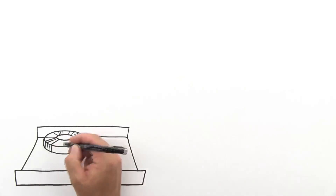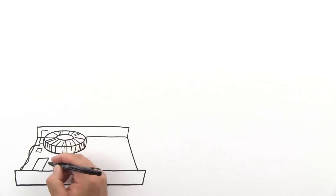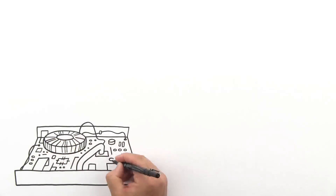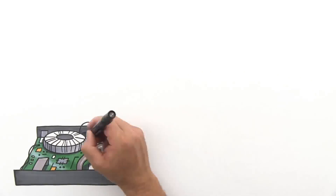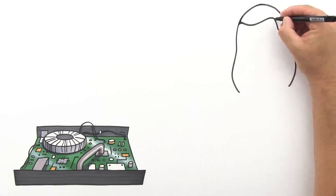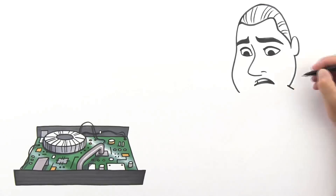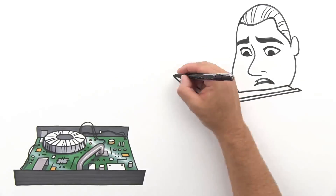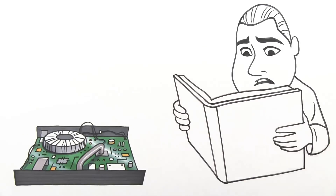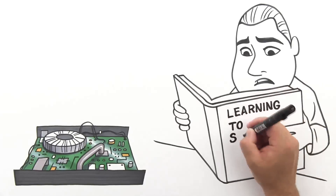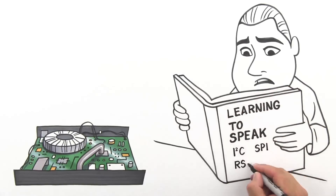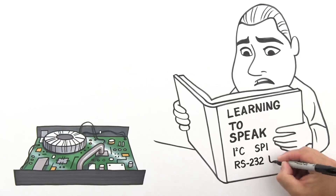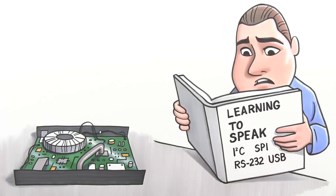Do you ever wonder what your design is thinking? Decoding the secrets of your serial buses can be a painful process to do manually. It's about like translating the original War and Peace by flipping around in a Russian to English dictionary. If only you were just dealing with Russian. But translating I-squared C, SPI, RS-232, USB, or another dialect?